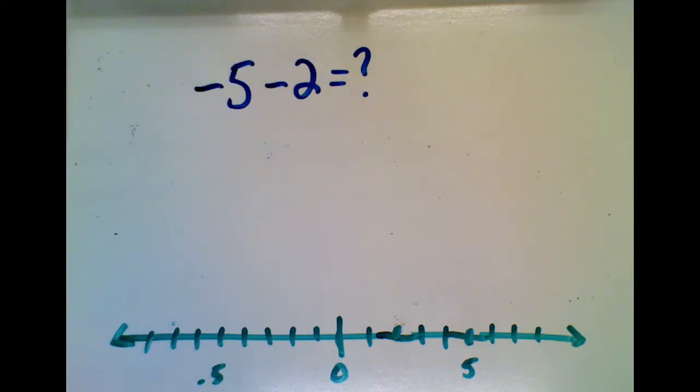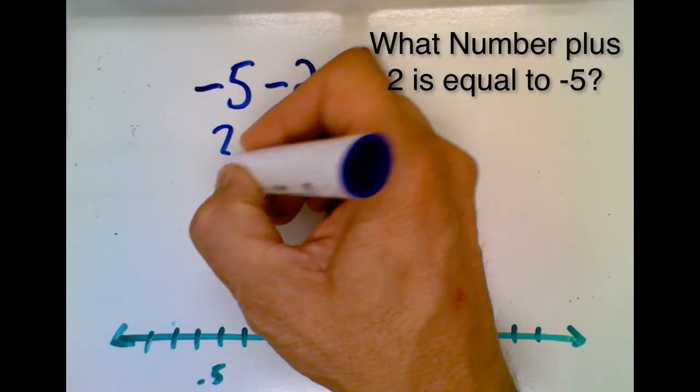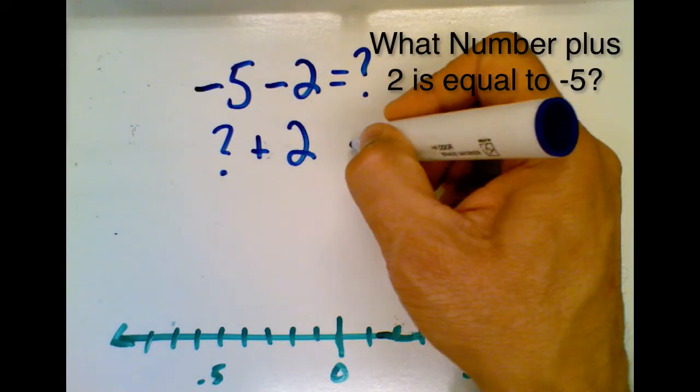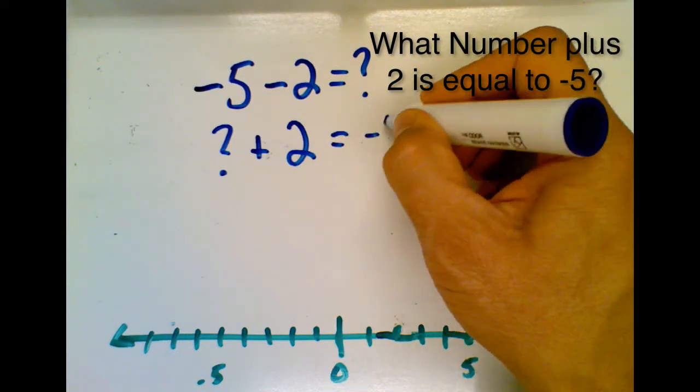And so if we use the same idea, instead we want to write this as an addition problem. And we ask what number plus 2 is equal to negative 5.